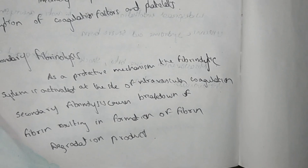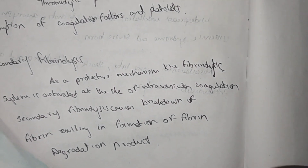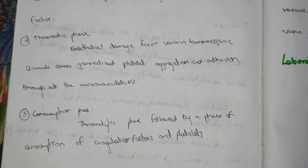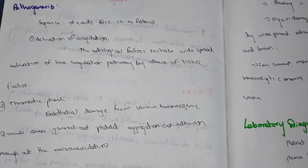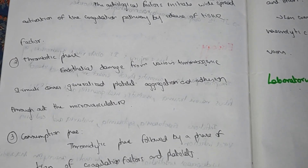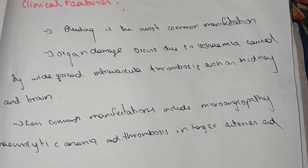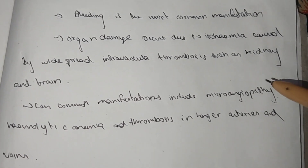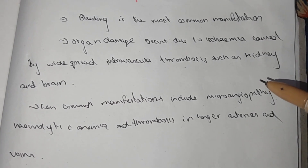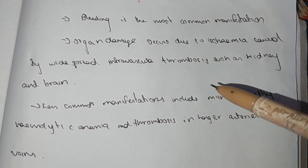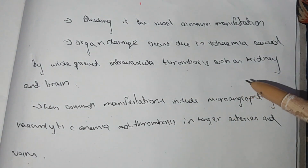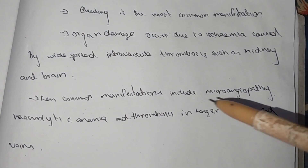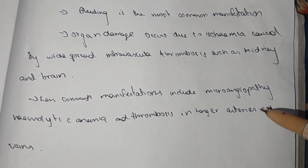There is formation of fibrin degradation products. The four steps in the pathogenesis of disseminated intravascular coagulation are: first, activation of coagulation; second, thrombotic phase; third, consumption phase; and fourth, secondary fibrinolysis. The clinical features are: bleeding is the most common manifestation; organ damage occurs due to ischemia from small intravascular coagulation in vascular channels; widespread intravascular thrombosis affects kidneys and brain. Less common manifestations include microangiopathic hemolytic anemia and thrombosis in larger arteries and veins.